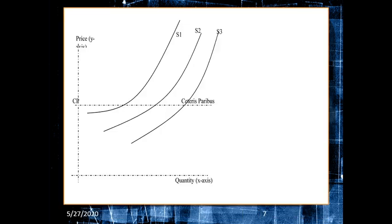Looking at the figure, we can see the ceteris paribus level illustrated. The x-axis refers to quantity, and we have multiple supply curves — S1 and S2. The y-axis is price. This shows that really only two factors matter: quantity is affected by price, provided that all other things are held equal.